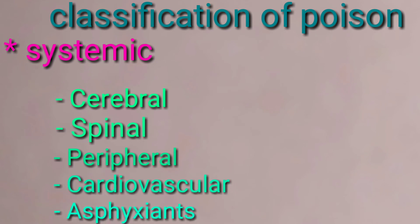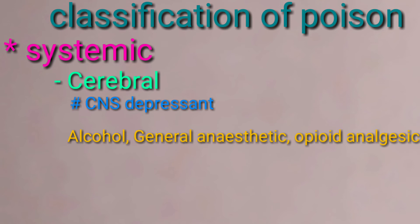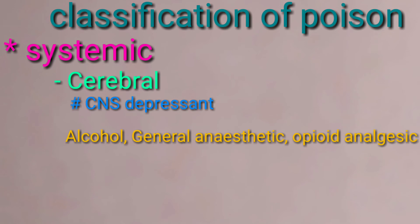Now, systemic poisons — categories include: cerebral, spinal, peripheral, cardiovascular, and asphyxiant. Under cerebral, CNS depressants: alcohol, general anesthetics, opioid analgesics, hypnotics, and sedatives.